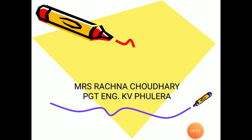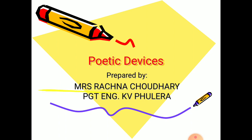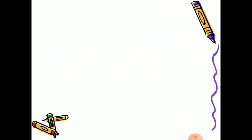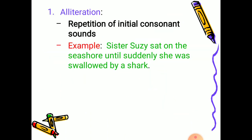Hello students, today we are going to see about poetic devices. The first term is alliteration. What is alliteration? It is the continuous repetition of initial consonant sounds.